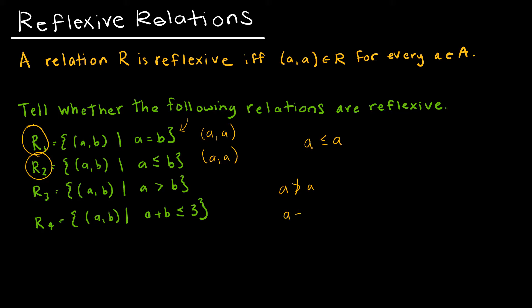For R4, A plus A is not always less than or equal to 3, so it would work for (0, 0) or (1, 1), but not for any other points. In order for a relation to be reflexive, it has to work for every A that belongs to that set. So the answer is only R1 and R2.